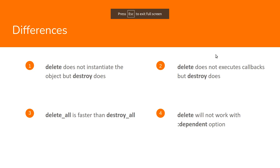The next difference is that delete does not execute callbacks but destroy does. Delete does not instantiate the object and hence does not execute any callbacks or filters. Since destroy instantiates the object first before deleting it, it executes all callbacks associated with that object. Also, delete_all is faster than destroy_all for the same reason.